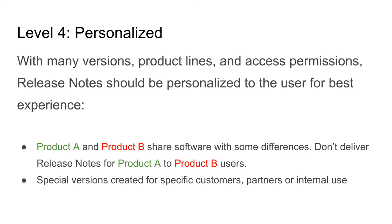We can have one version of our release notes that discloses everything — including technical descriptions, who opened the issue, for what customer, who fixed it. This is extremely useful for internal support agents, developers, and partners, but not something we want to give to all clients. By tagging content in a specific way, we can remove all that excess information when producing a public-facing version, which has been very valuable for quality assurance on the back end.